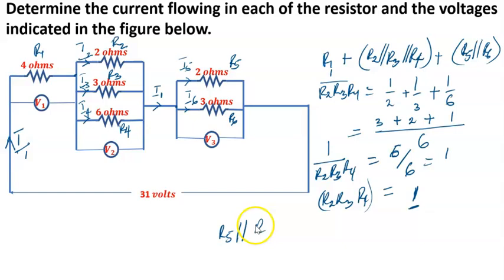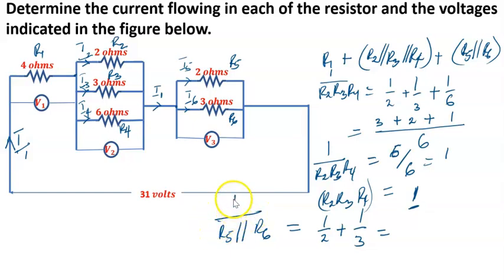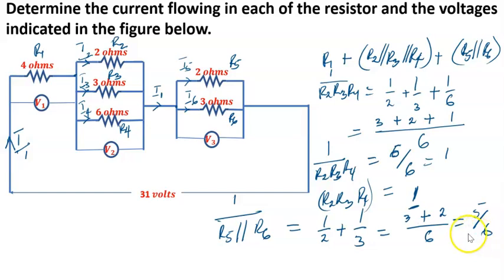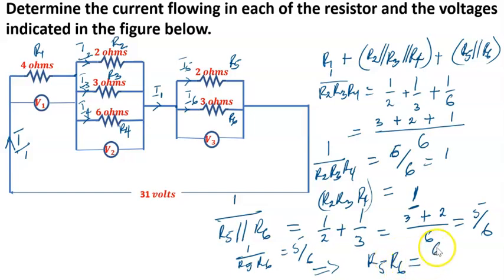Now let's find r5 in parallel with r6. We compute 1/r = 1/2 + 1/3. The LCM is 6: that gives 3/6 + 2/6 = 5/6. So 1/r₅₆ = 5/6, which implies r5 parallel r6 = 6/5 = 1.2 ohms. We explained how to treat resistors in parallel in our earlier lesson — please check the description below if you missed it.